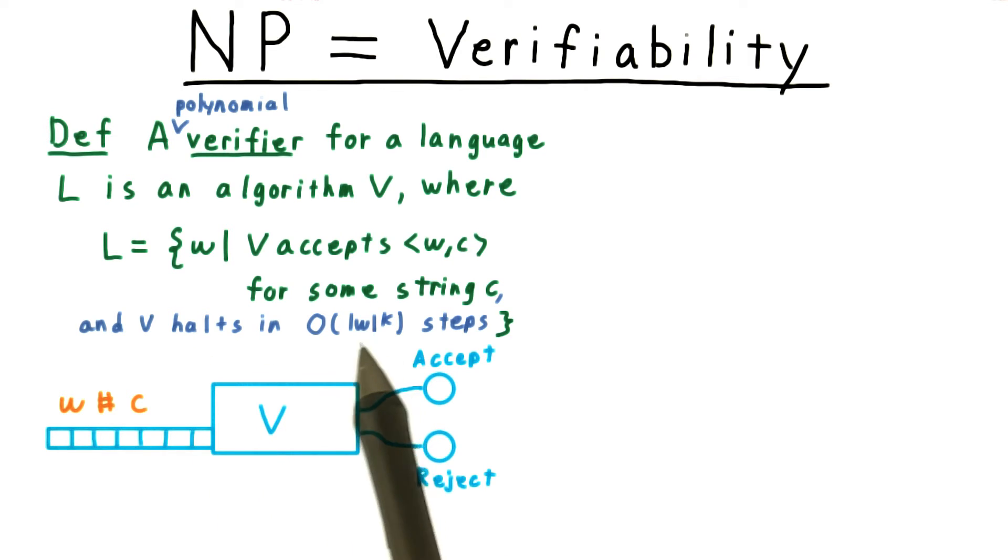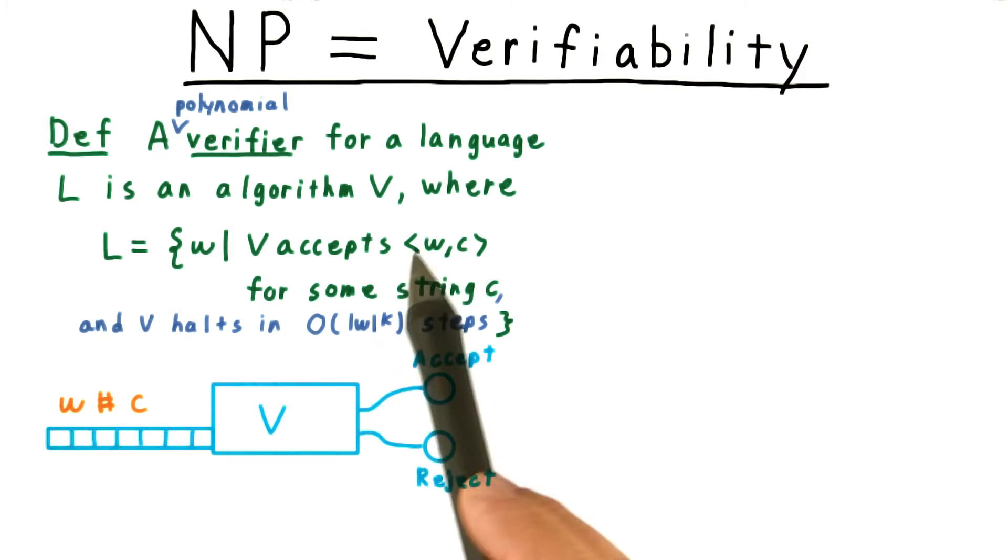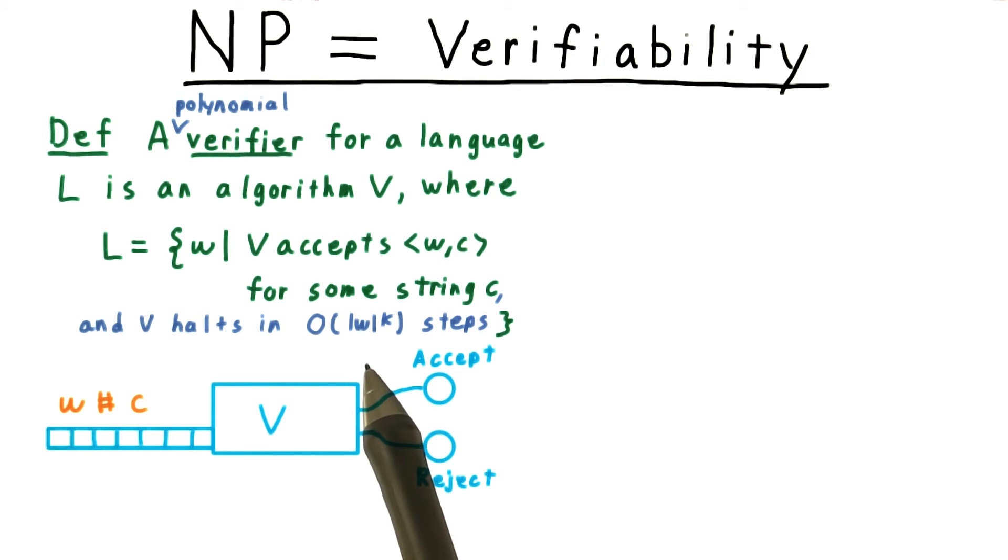Note that this W is the same as the one in the definition here. It's the string that's a candidate for the language. If we included the certificate in the bound, then it becomes meaningless since we could make C as long as necessary.